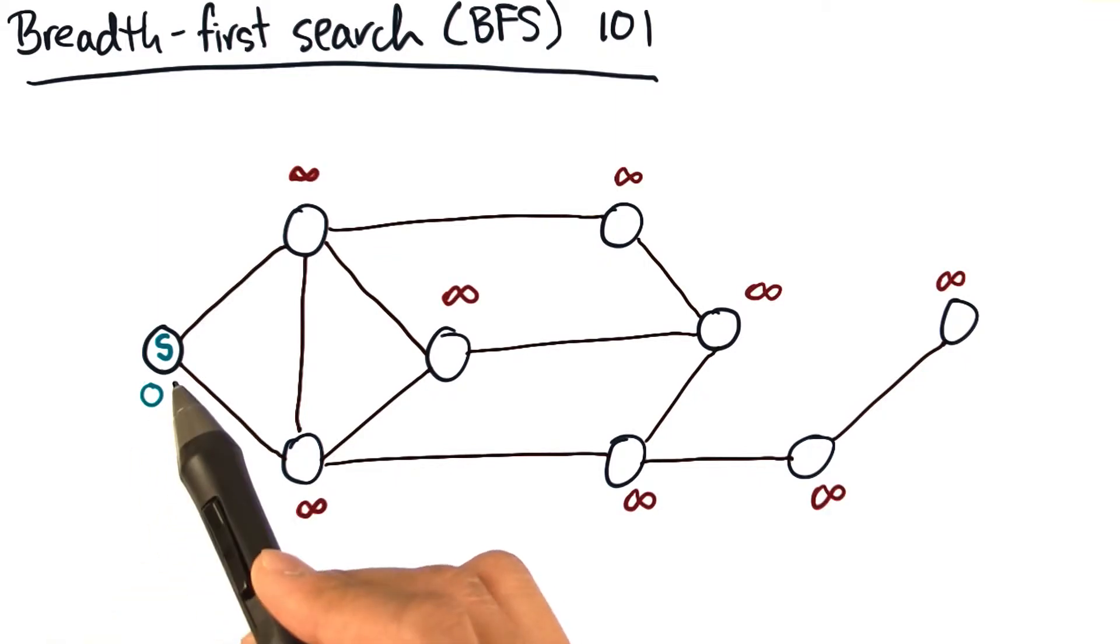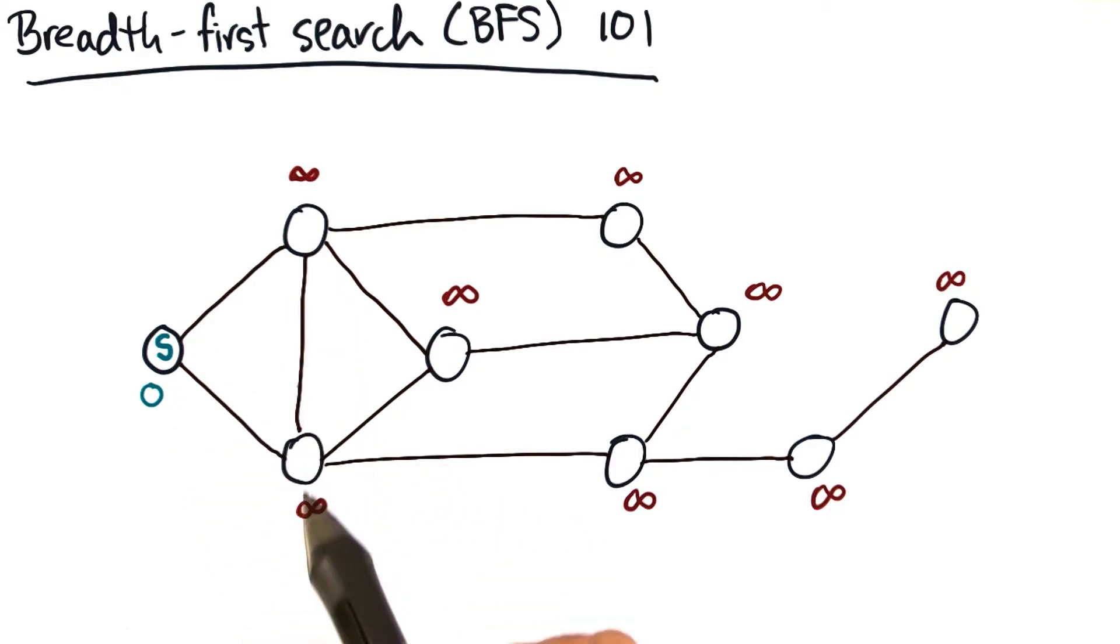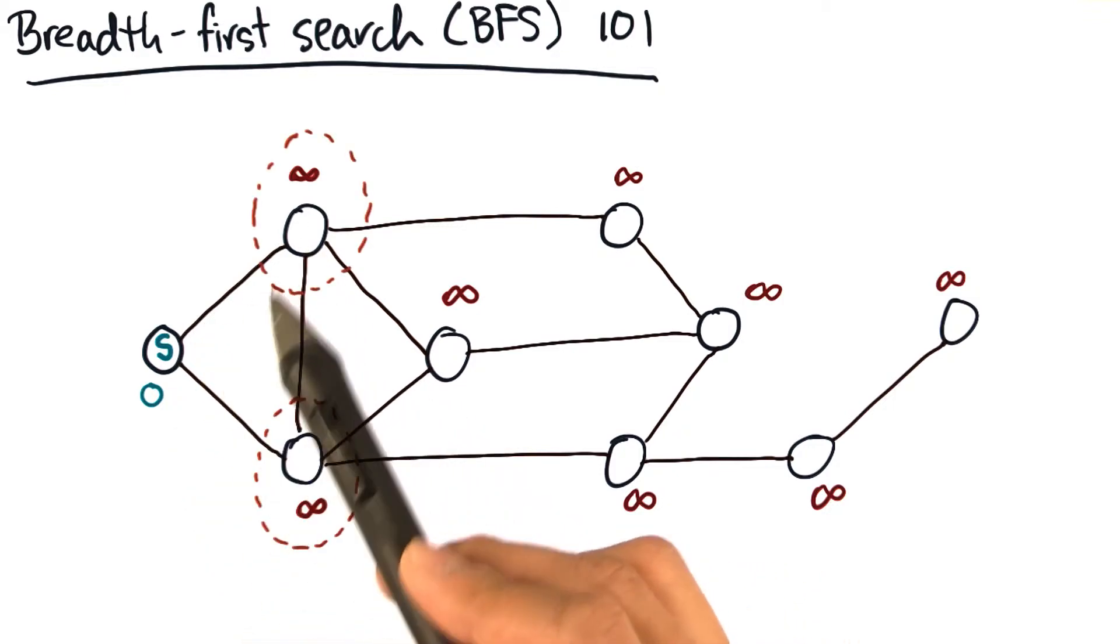Next, start at the source and look at its immediate neighbors. These neighbors are one away from the source, so let's update their distances to be one.